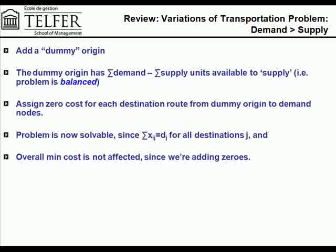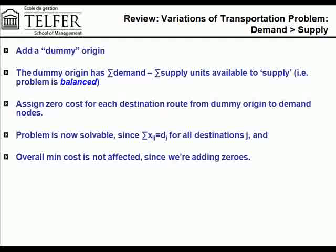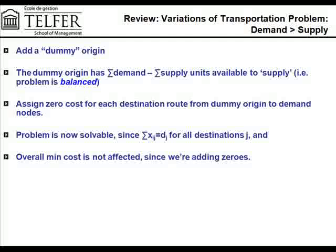Where the demand is greater than supply, the idea is that when the demand is more than the supply, one of the things we can do is use a dummy supply node. The supply possible out of that dummy node is going to be just the difference between demand and supply, which in this case is 25 units. We use this dummy node to supply 25 units somewhere in our network, and whichever demand node gets those 25 units will be the node that falls short. The dummy node is assigned a cost of zero for every destination node, so our overall total cost solution is not affected.